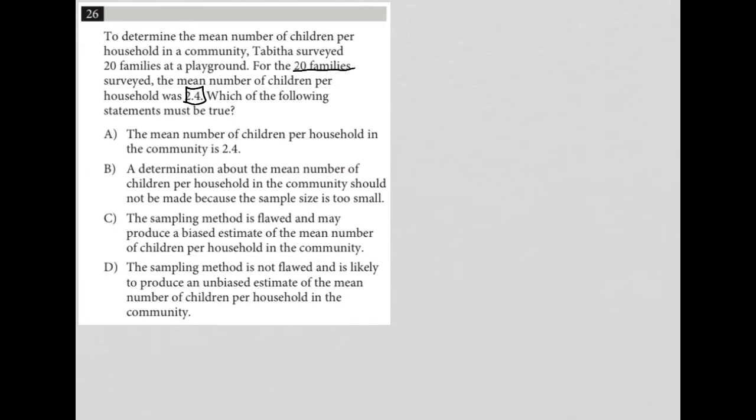Which of the following statements must be true? Now remember, we're trying to determine the mean number of children per household in an entire community, and 2.4 came out of this experiment where only 20 families at a playground were surveyed. So answer choice A says, the mean number of children per household in the community is 2.4. Well, we can't really say that. First of all, because we only surveyed 20 people, we don't know how many people are in the entire community.